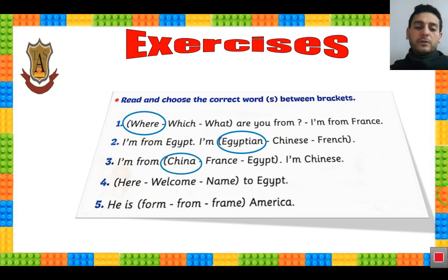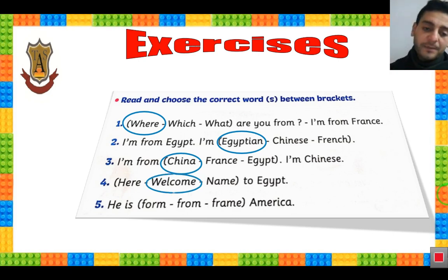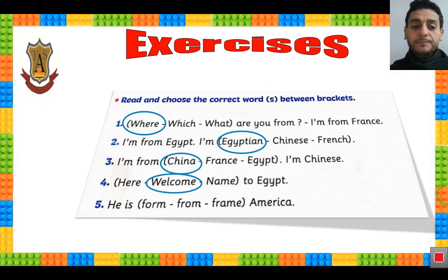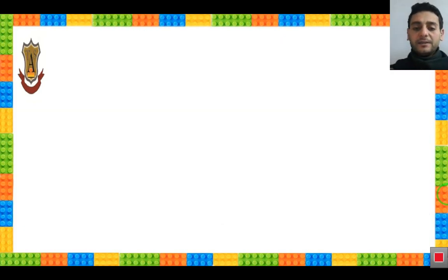Number 4: Here / welcome / name to Egypt — Welcome to Egypt. Good boys and girls. Number 5: He is from America. Okay, he is from America.